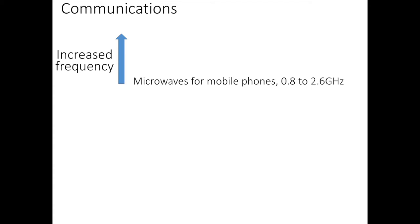So today we are going to look at communications and how we use different frequencies to transfer data. Microwaves for mobile phones are the lowest frequency we are going to look at and they range between 0.8 and 2.6 GHz.